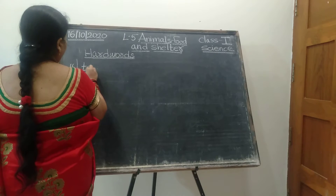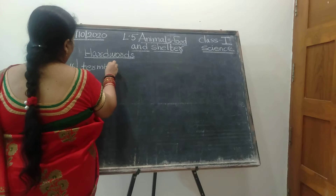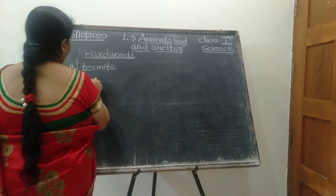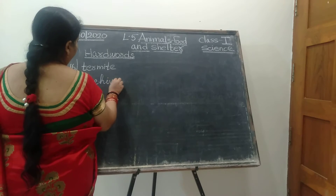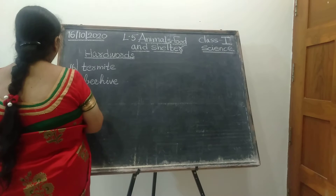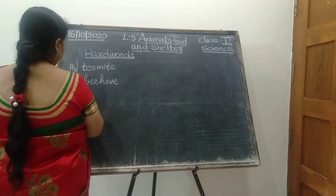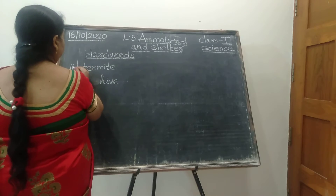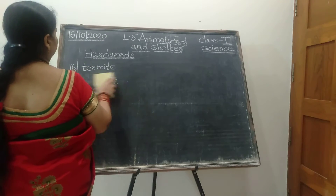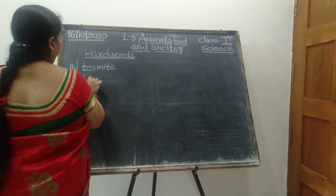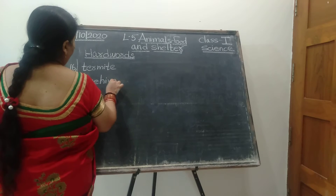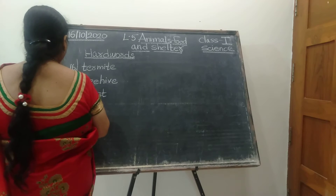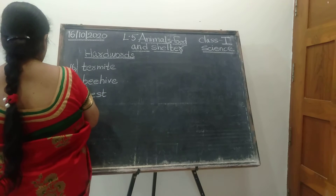Spell the word termite: T-E-R-M-I-T-E. Next one — spell the word of beehive: B-E-E-H-I-V-E. Because you are writing in print, it's not cursive. Eighteenth one — we are writing the word nest: N-E-S-T. Nineteenth one — spell the word: web.